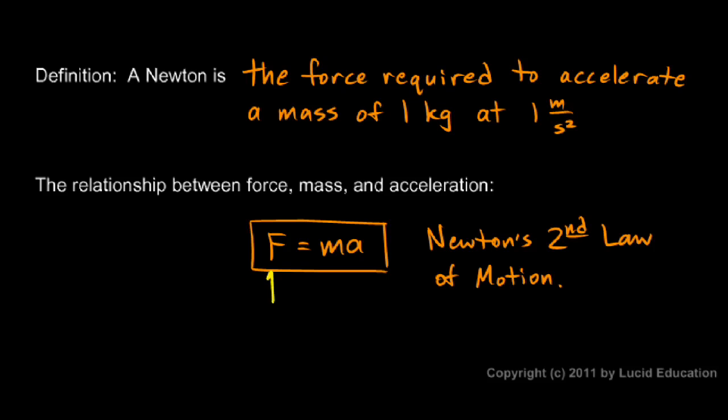If you know any two of these three things, you can calculate the third. We already saw that the equation could be written like this: a equals F over m. You could also write it like this: m equals F over a.